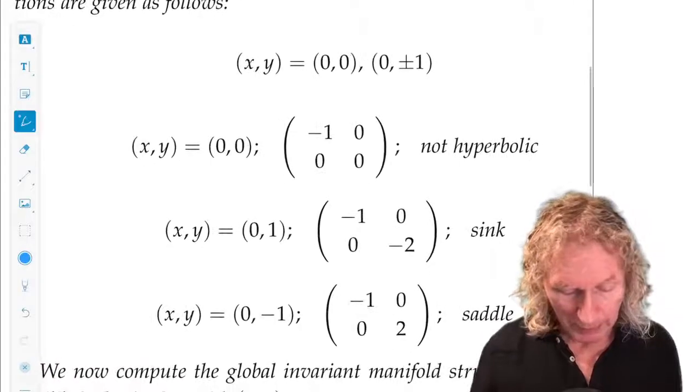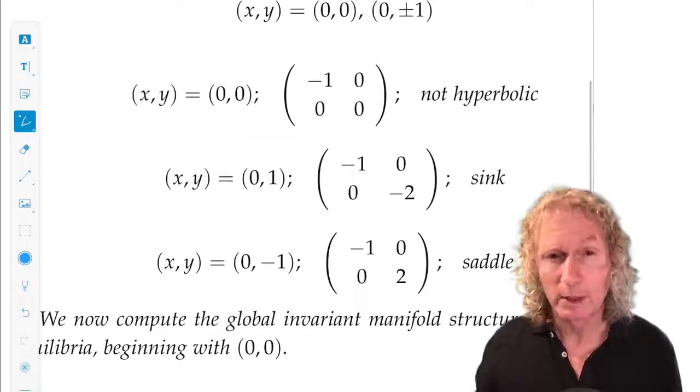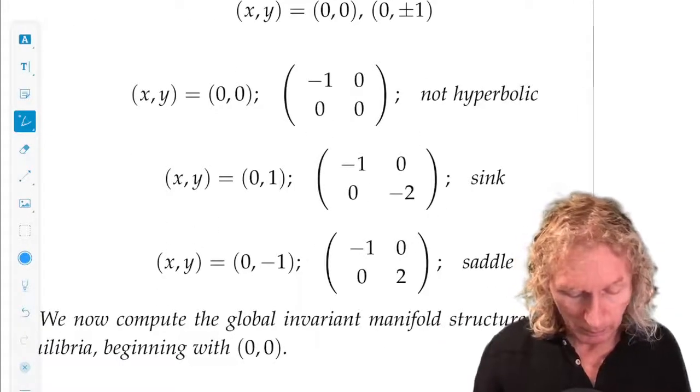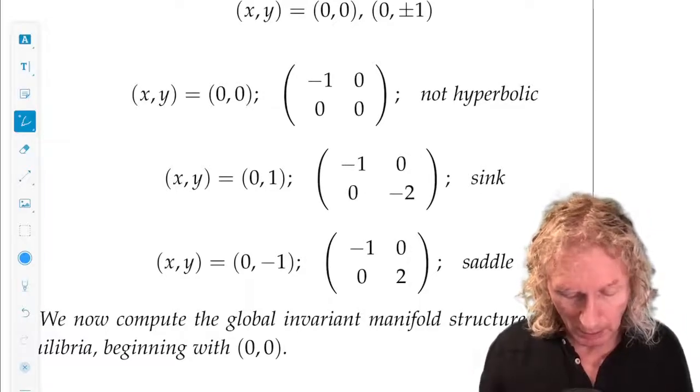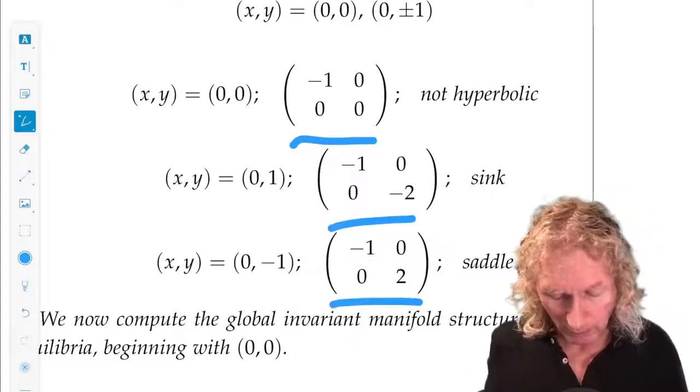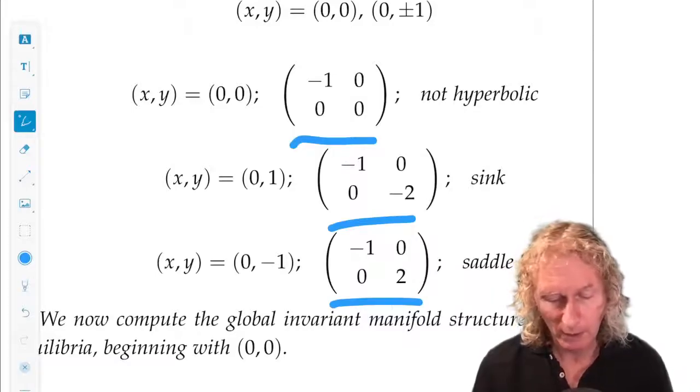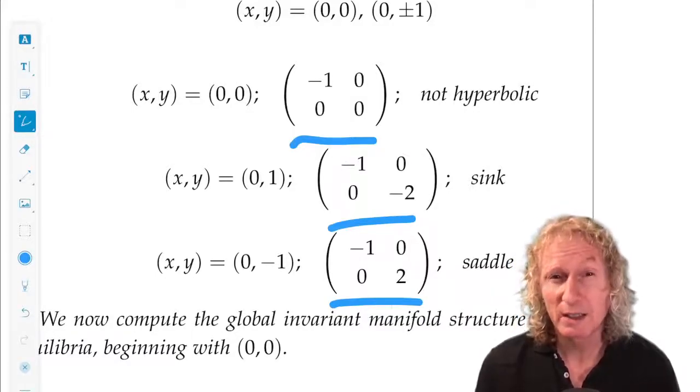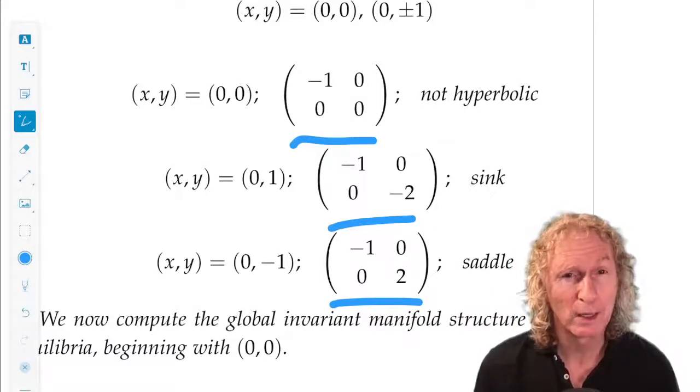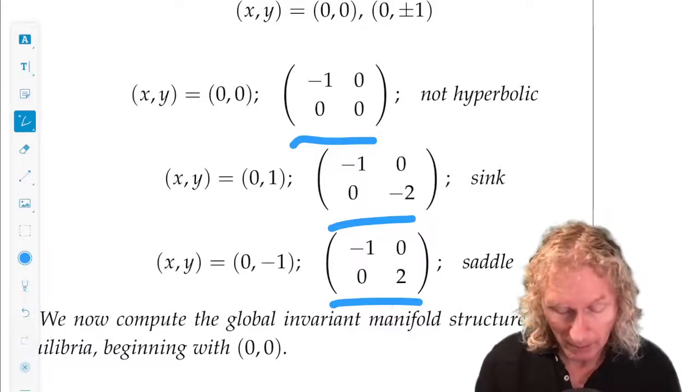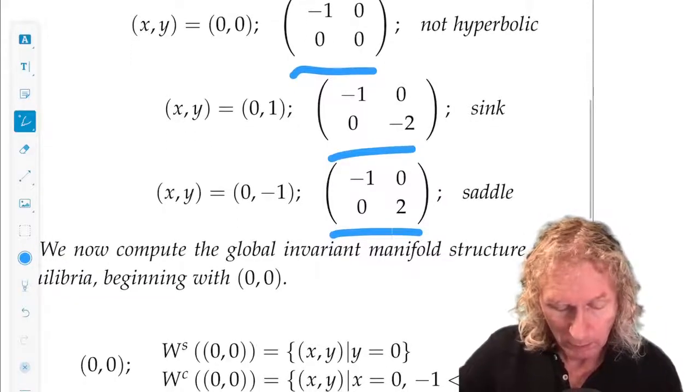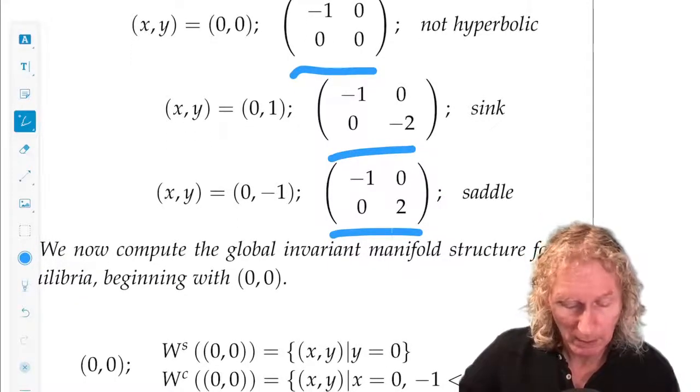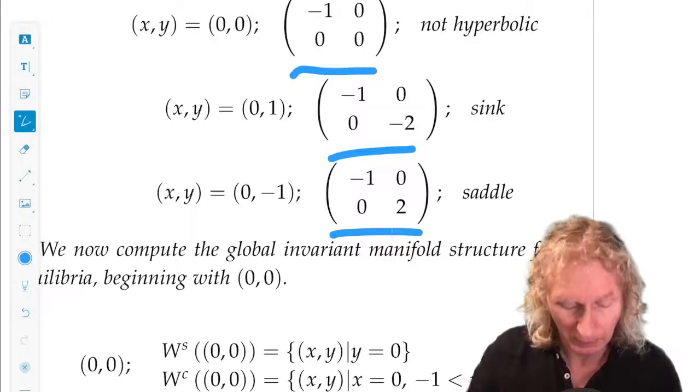We can also linearize about those three equilibria, which I've done here. And the associated Jacobians are given by these two-by-two matrices. We see that the origin is not hyperbolic. It has one eigenvalue having zero real parts. In fact, it is zero. And zero, one is a sink. And zero minus one is a saddle.